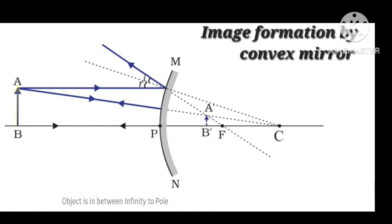To form the image of an object, we need to consider at least two rays from the head of the object, point A. The first ray is parallel to the principal axis. A ray parallel to the principal axis reflects back from the focus.